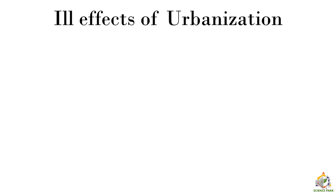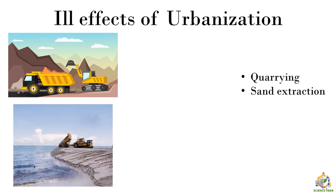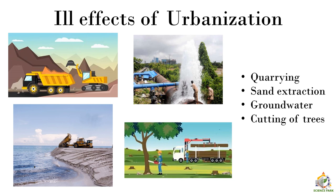As a lot of people are moving to cities, there are a few ill effects of urbanization. One is quarrying — we use natural resources to build apartments, and due to quarrying there is soil erosion. We cut down a lot of trees, causing pollution. We extract sand from riverbeds, which is very harmful. We also extract a lot of groundwater, which is a precious and limited natural resource. And of course, the cutting of trees is very harmful for the environment.